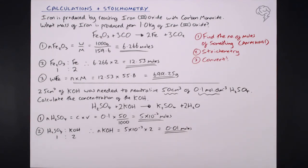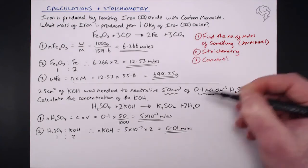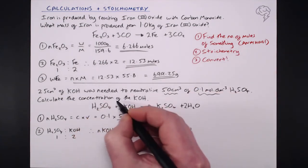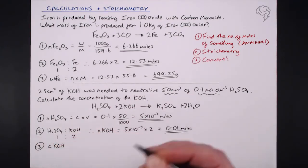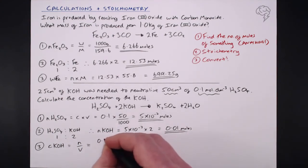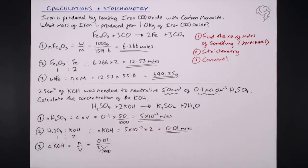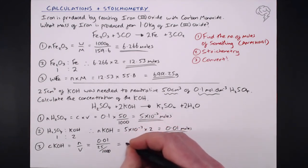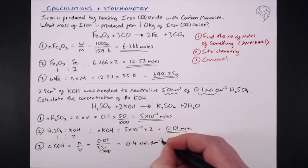Step three: convert the number of moles into a concentration, which is what the question asks for. The concentration of KOH = moles ÷ volume = 0.01 moles ÷ (25 ÷ 1000) dm³ = 0.4 mol/dm³.